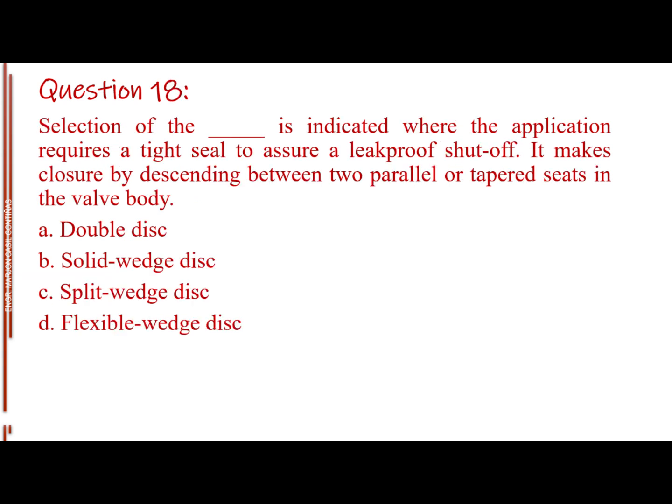Question number 18. Selection of the blank is indicated where the application requires a tight seal to assure a leak-proof shutoff. It makes closure by descending between two parallel or tapered seats in the valve body. Letter A, double disc. Letter B, solid wedge disc. Letter C, split wedge disc. Letter D, flexible wedge disc. The answer is letter A, double disc.